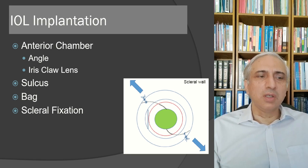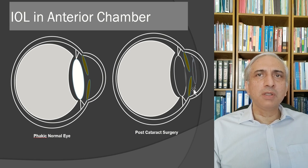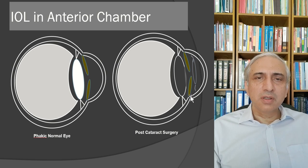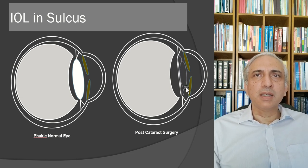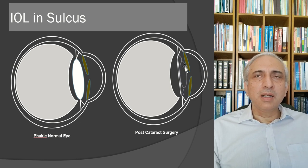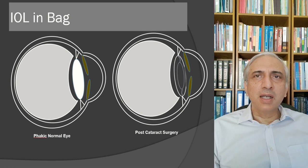An anterior chamber IOL residing in the angle can damage the endothelium, cause iris damage and glaucoma, or produce recurrent hyphema. A sulcus-placed IOL sits between the capsule and the posterior iris surface — it contacts the iris more, causing greater pigment dispersion. The ideal position is in the capsular bag, where the IOL sits away from the iris, produces least inflammation, and integrates best.